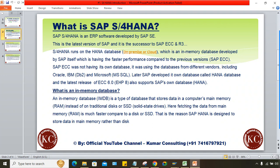In S4HANA also, different versions are there — 1610, 1709, 1809, 1909, 2020, 2021, 2022, 2023. The latest version currently is 2023. When I say S4HANA is the successor to ECC and R3, it doesn't mean only two versions were launched. There are several versions, and from 2023 onwards SAP plans to deliver major releases every two years.